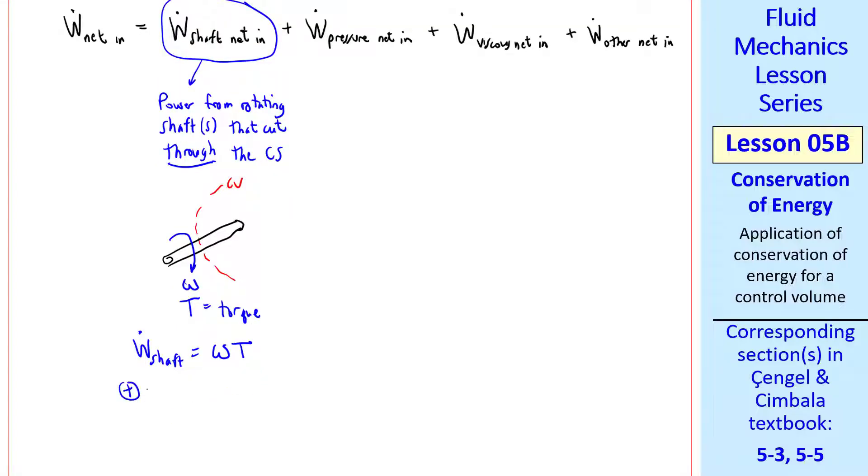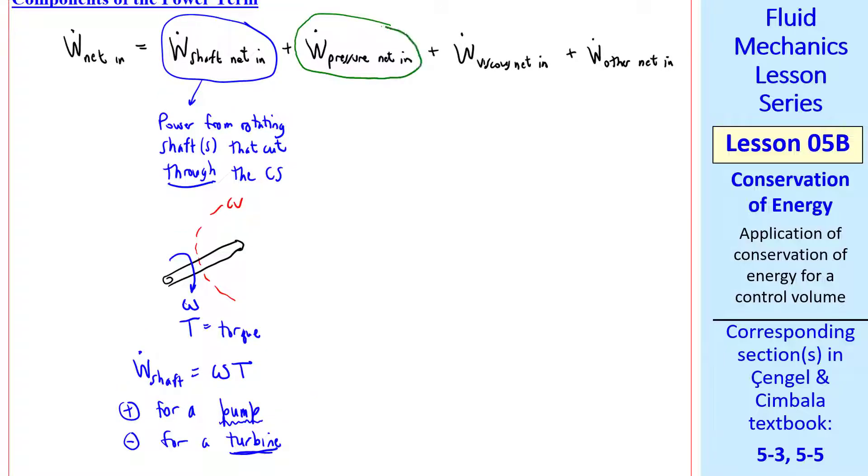Note that this term can be positive or negative. It's positive for a pump (pump is a general term for a pump, compressor, a blower, a turbo machine that adds power to the fluid), and it's negative for a turbine, where we extract power from the fluid. Now let's look at the pressure term. Consider some rectangular control volume with an inlet 1 and an outlet 2. At the inlet, we're pushing the fluid in the direction of the flow.